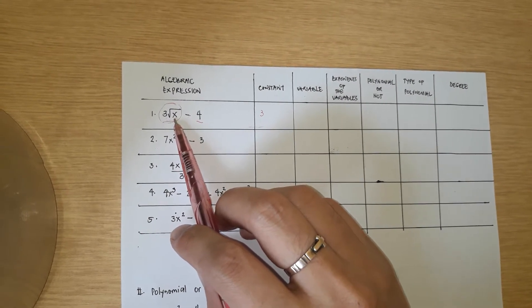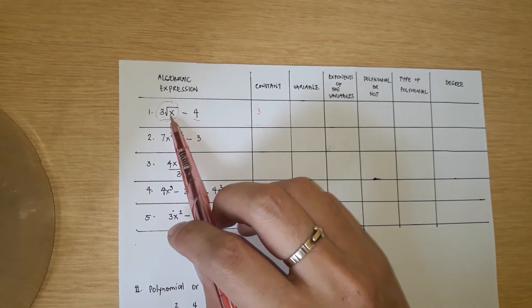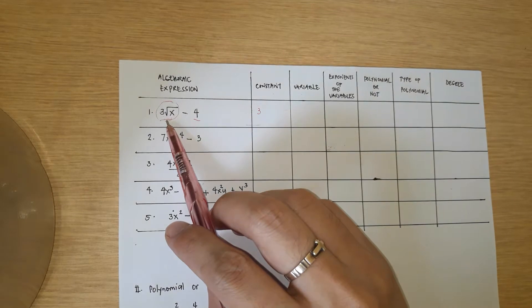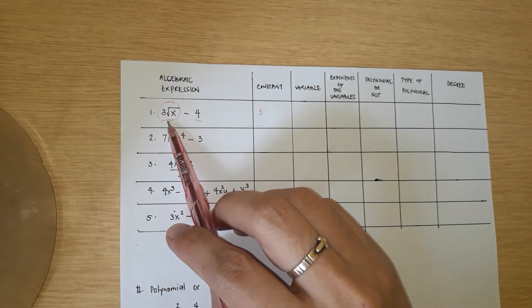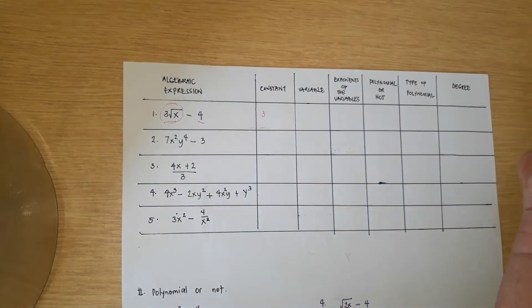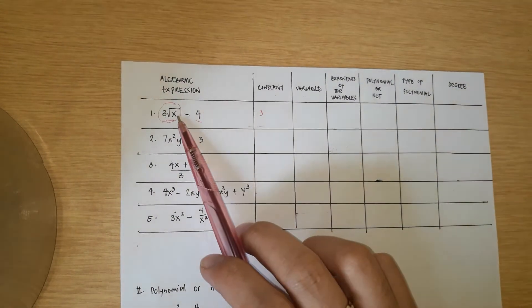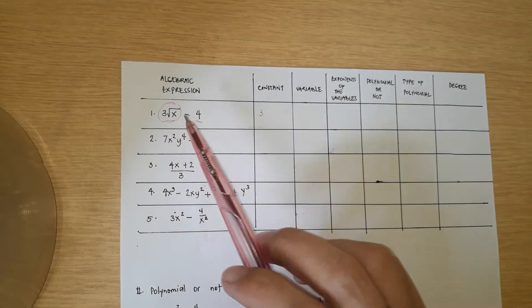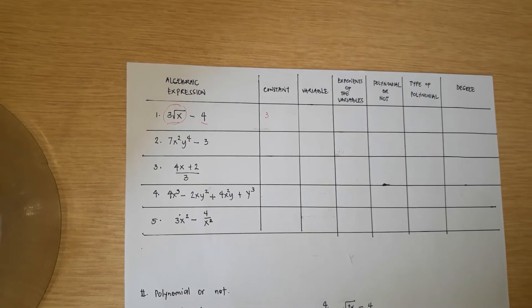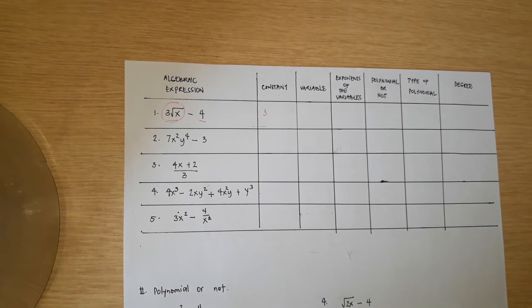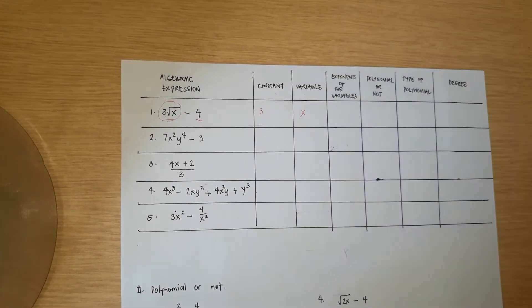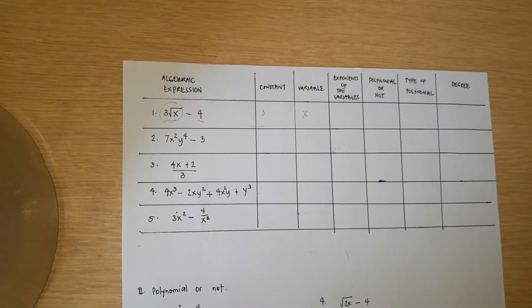Note that pi is a constant rather than a variable, because the value of pi is always 3.14 — it cannot be 1 or 2. However, x can be 1, can be 2, so it is not constant. That's why x is the variable here. Next, what about the exponent? The exponent applies to the variables, though constants can also have exponents.